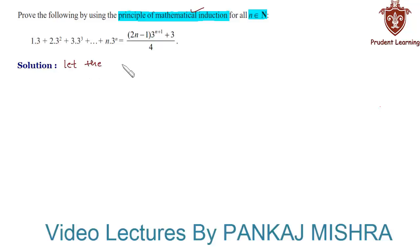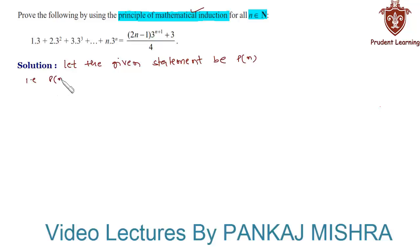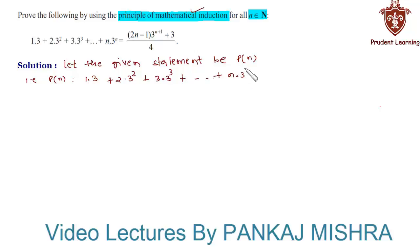Let the given statement be P(n), that is we have P(n) such that 1·3 + 2·3² + 3·3³ + ... + n·3ⁿ equals (2n − 1)·3^(n+1) + 3, all divided by 4.